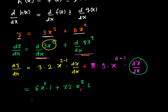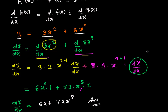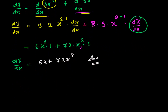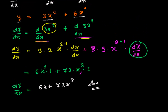Finally, dy/dx equals 6x plus 72x to the power 8. That's the answer. See how easy it is to use the sum rule with the power rule. I'll do one more complex problem, but the video is going long so I'll do it in the next video. All right, see you in the next video — bye bye!